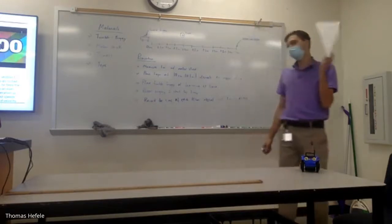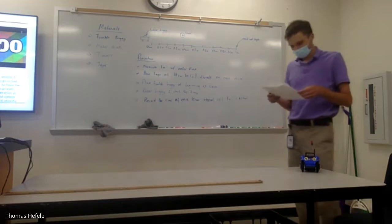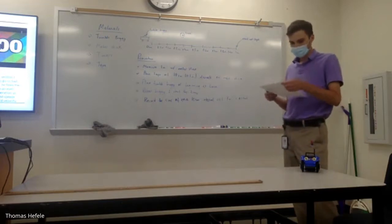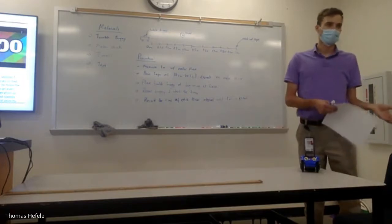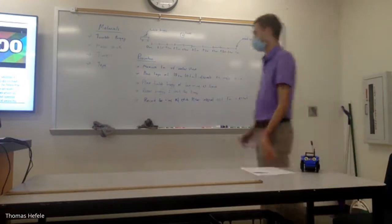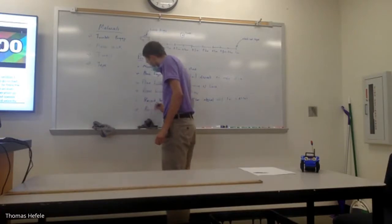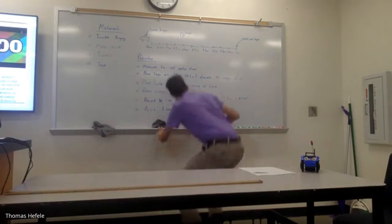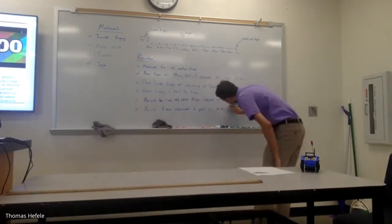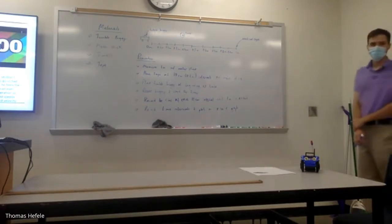Now we have all our data and it's complete. The last thing we have to do is take our data and record it, then plot it on a position versus time graph. So: record the time intervals and plot on an x versus t graph. That is essentially our procedure in a nutshell.